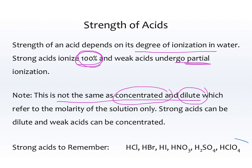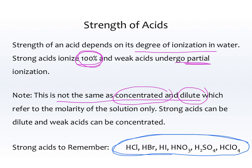You need to memorize the list of strong acids. The College Board expects you to know them off the top of your head. The six strong acids are: hydrochloric, hydrobromic, hydroiodic, nitric, sulfuric, and chloric acids. Memorize those.